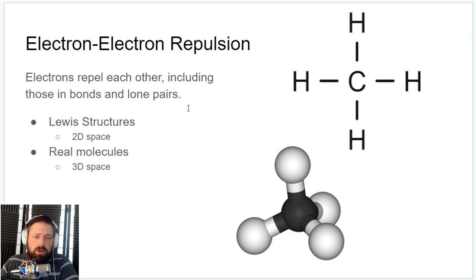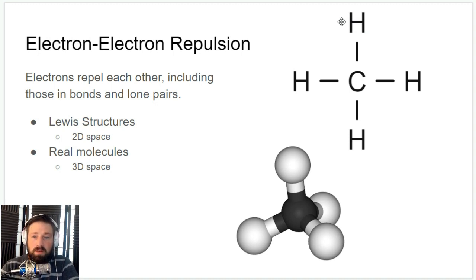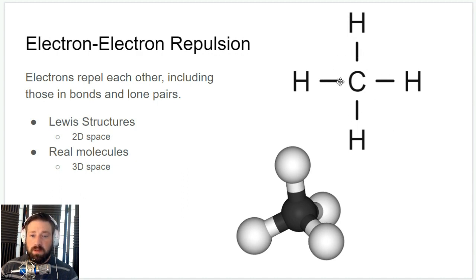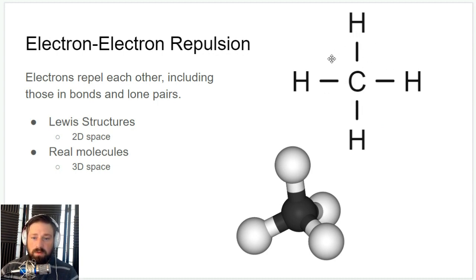Whenever we're doing Lewis structures we're drawing them on paper — they're 2D structures with up, down, left, right, but no forward and backward. In reality we live in a 3D world. In a 2D world, this is as far apart as electrons can push each other — they're all 90 degrees apart from each other.